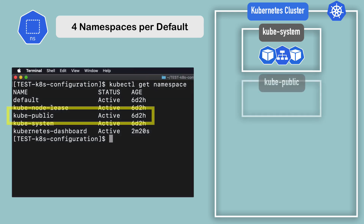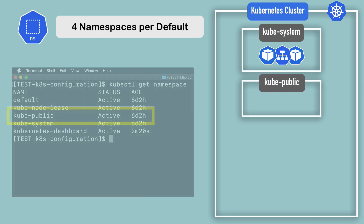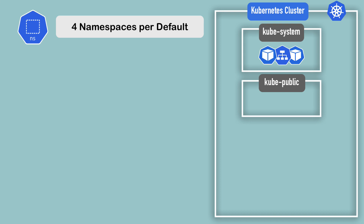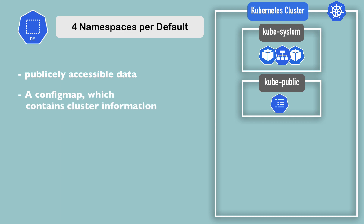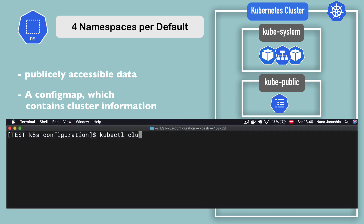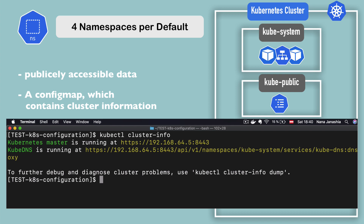The next one is kube-public. What kube-public contains is publicly accessible data. It has a config map that contains cluster information which is accessible even without authentication. So if I type kubectl cluster-info, this is the output that I get through that information.